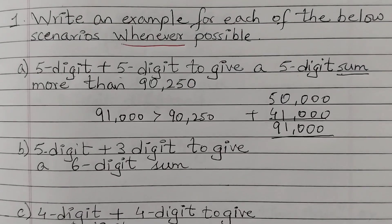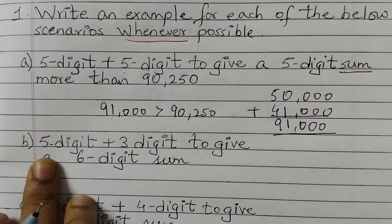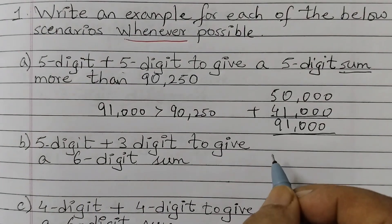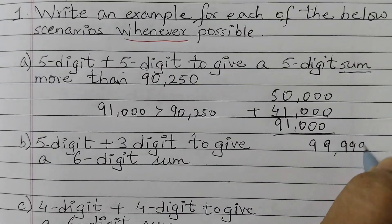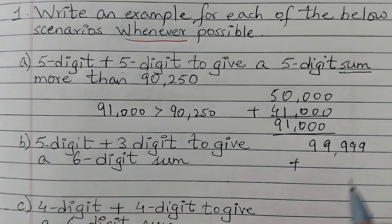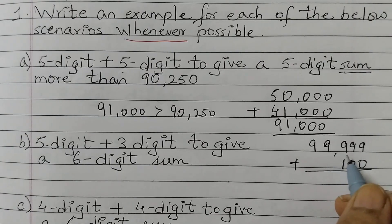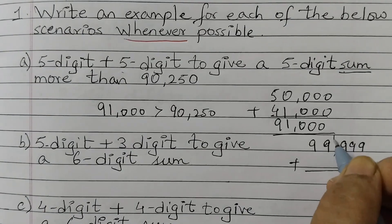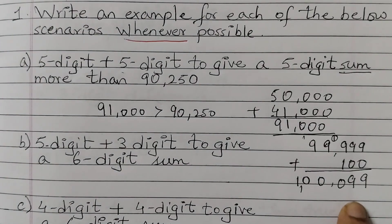Next: 5 digit plus 3 digit to give a 6 digit sum. So we should add a 5-digit number and a 3-digit number, and the answer should be 6 digits. Let's add 99,999 — that's a 5-digit number — plus 100, a 3-digit number. Take a big 5-digit number and do the addition. We get 1,00,099. You can take your own examples.